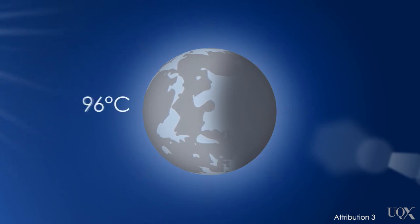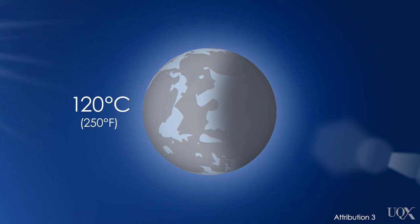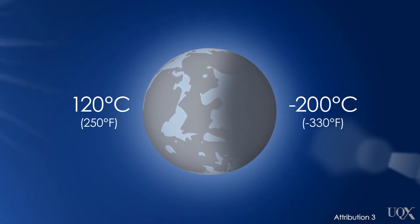Daytime temperatures on the moon reach 120 degrees Celsius or 250 degrees Fahrenheit. Nighttime temperatures fall below minus 200 degrees Celsius or minus 330 degrees Fahrenheit.